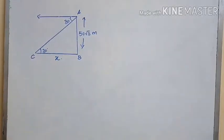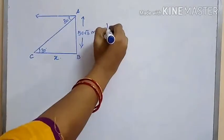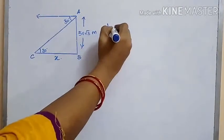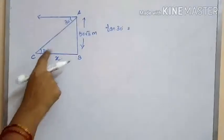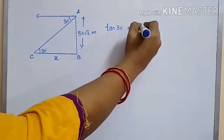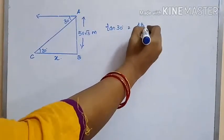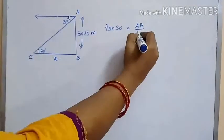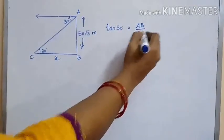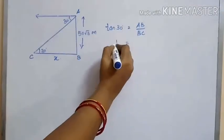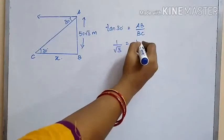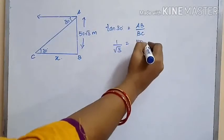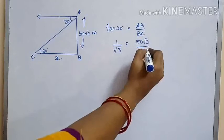Let the horizontal distance of the car from the rock be represented as x. Let AB be the rock. From this triangle, we observe that tan 30 is equal to opposite side AB divided by adjacent side BC. We know that the value of tan 30 is 1/√3, which equals 50√3 divided by x.